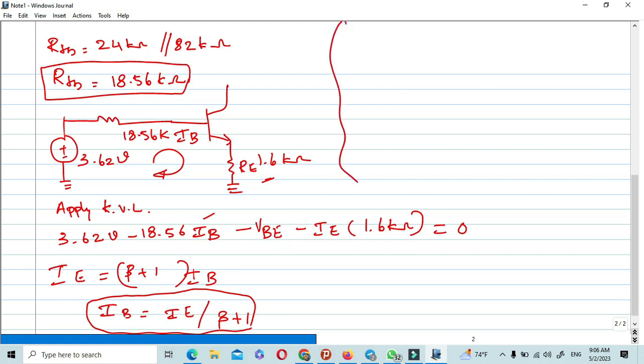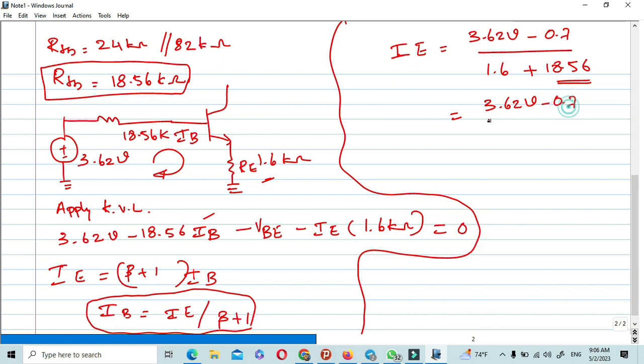After reduction of this, IE equals 3.62 voltage minus 0.7 over 1.62 plus 18.56. This is the value of IB.